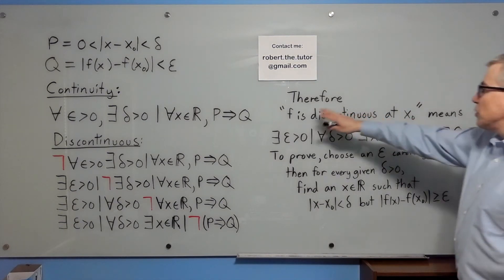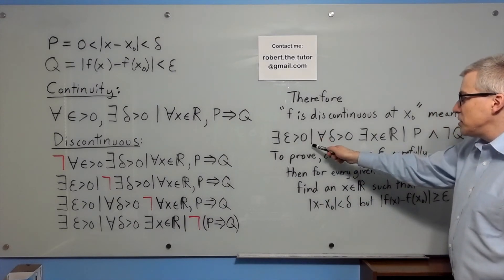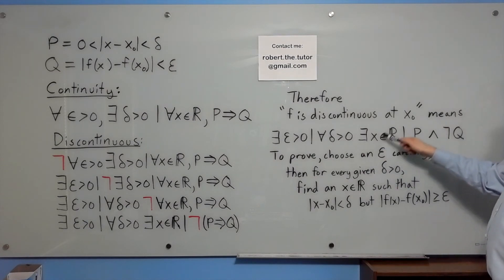So therefore f is discontinuous at x zero means there exists an epsilon greater than zero, such that for all delta greater than zero, there exists an x in the reals such that p is true and not q is true.